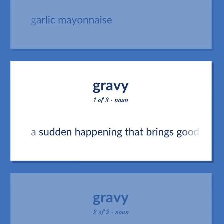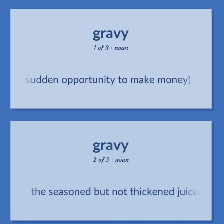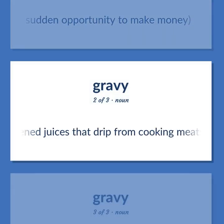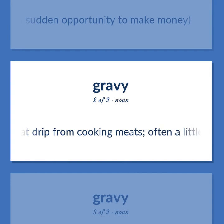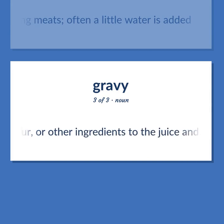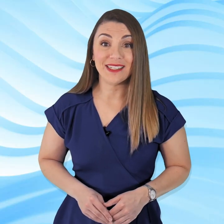Gravy: A sudden happening that brings good fortune, as a sudden opportunity to make money. The seasoned but not thickened juices that drip from cooking meats — often a little water is added. A sauce made by adding stock, flour, or other ingredients to the juice and fat that drips from cooking meats.